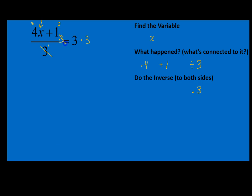What that does is the 3's cancel each other out here, and we're left with 4x plus 1 on the left side. And that's equal to 9 on the right side. 3 times 3 is 9.